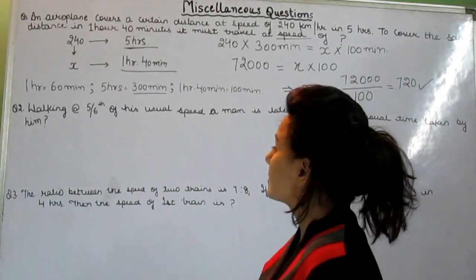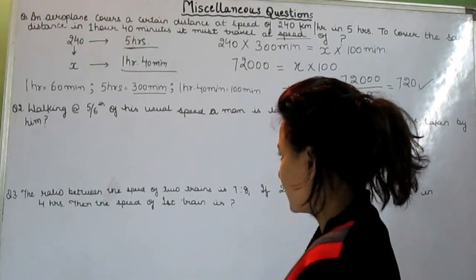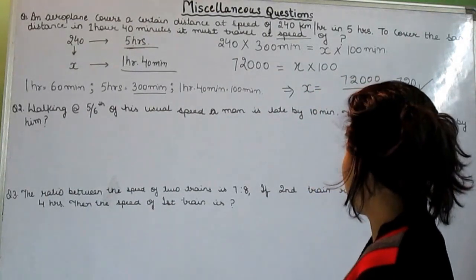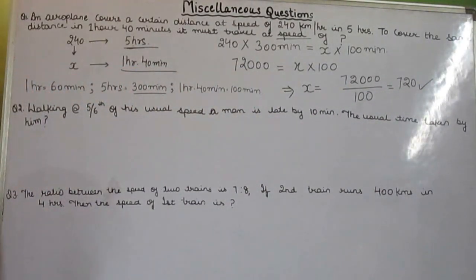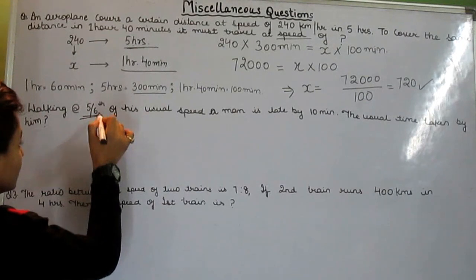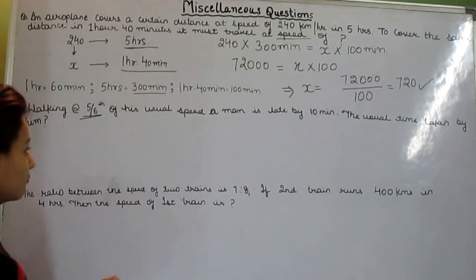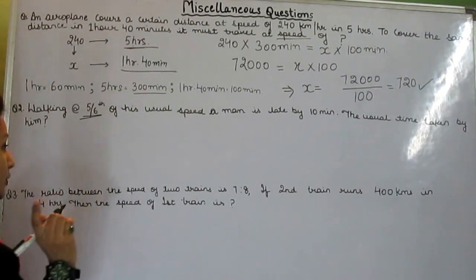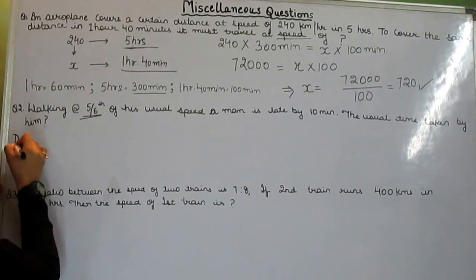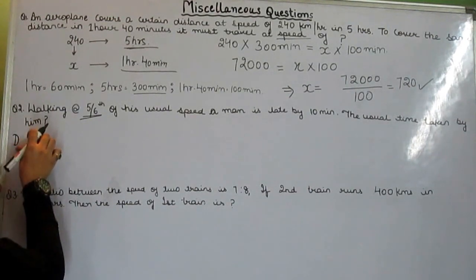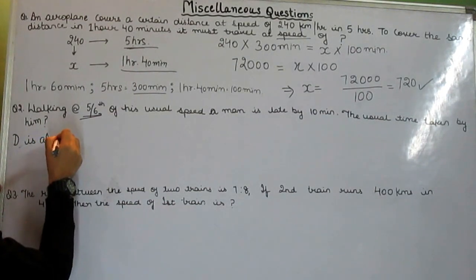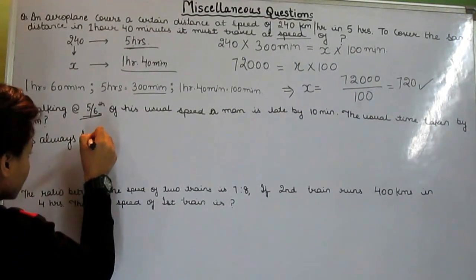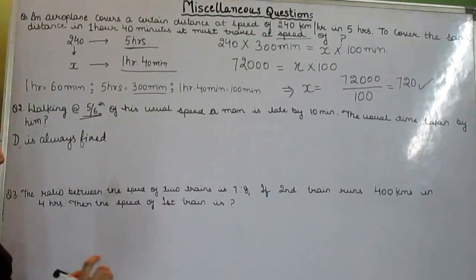Next question is: walking at 5 by 6 of his usual speed, a man is late by 10 minutes. The usual time taken by him? Whenever you see the question in fractions, you always have to apply one formula. That is, first of all you need to know one thing: that denominator is 6. Denominator is always fixed. There will be no changing, nothing in denominator.